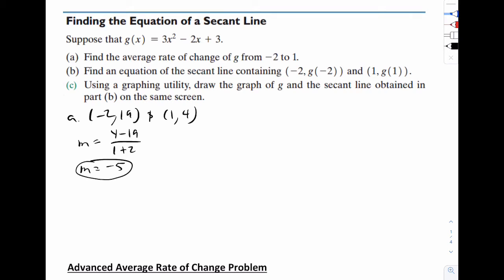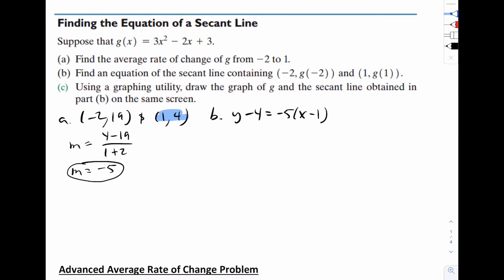Now let's find the equation of the secant line that contains these two points. We can use point slope form with any point. I'll pick this point because it looks clean. y minus 4 is equal to negative 5 times x minus 1. I'll put it in slope intercept form to make it a little bit nicer. So y would equal negative 5x plus 9.